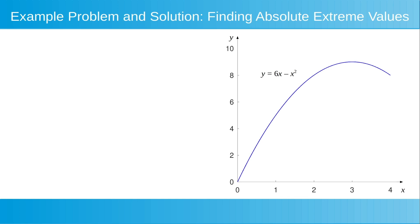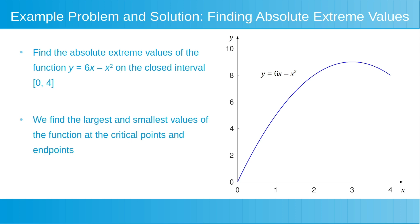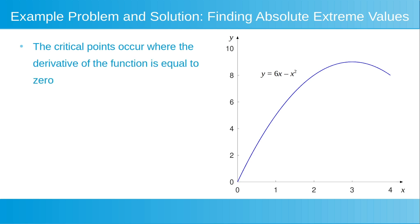We will now demonstrate how to find the extreme values of a function in an example problem and solution. We want to find the absolute extreme values of the function y is equal to 6x minus x squared, on the closed interval from 0 to 4. We can find the largest and smallest values of the function at the critical points and endpoints. The critical points occur where the derivative of the function is equal to zero or is undefined. For this function, on the closed interval from 0 to 4, there are no interior points where the derivative is undefined.